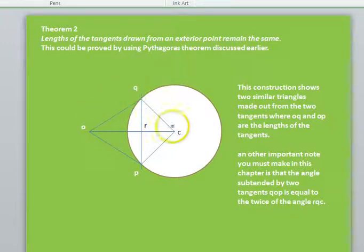Here, my triangles are O, Q, C and O, C, P are my two similar triangles over here.